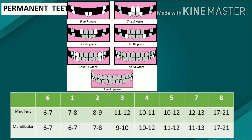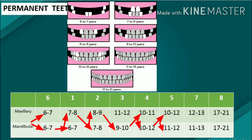The sequence of eruption of the permanent teeth is as follows: maxillary and mandibular first molar, mandibular central incisor, maxillary central incisor, mandibular lateral incisor, maxillary lateral incisor, mandibular canine, maxillary first premolar, mandibular first premolar, maxillary second premolar, mandibular second premolar, maxillary canine, mandibular second molar, maxillary second molar, maxillary and mandibular third molar.